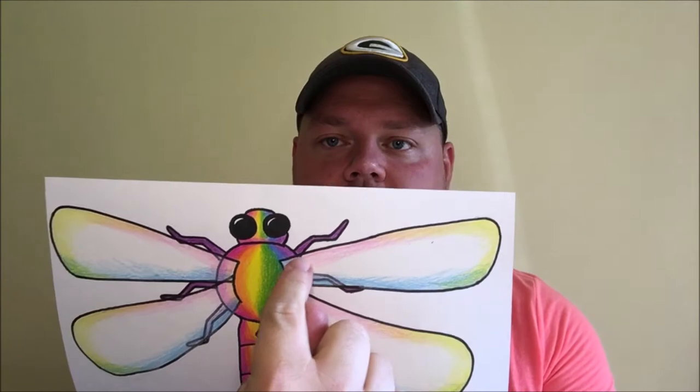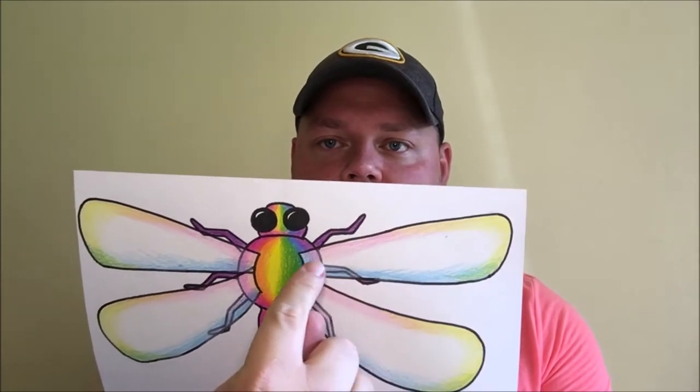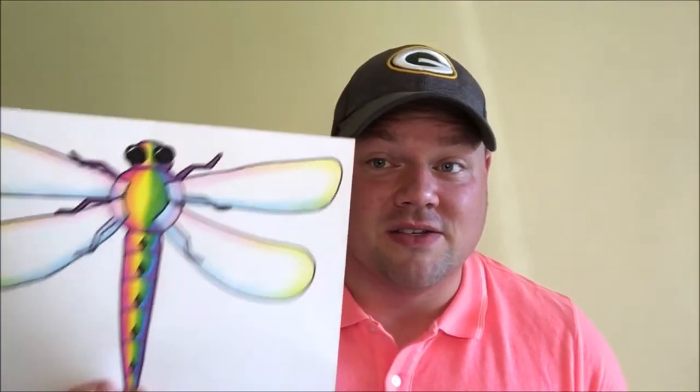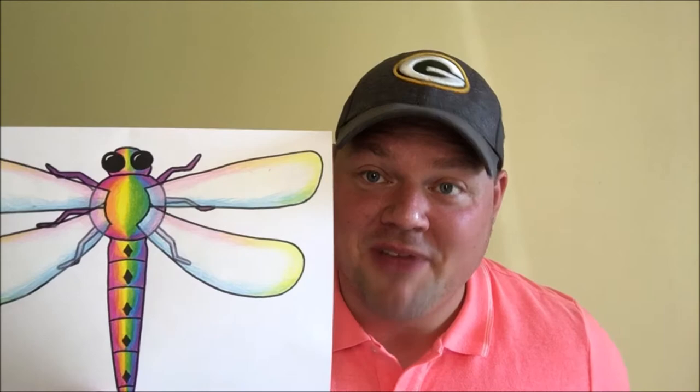I'm even going to show you how to create this cool kind of iridescent look on the wings. Here's what you're going to need today. You're going to need a piece of paper, a pencil, eraser, a permanent marker, and something to color with. I used colored pencils. Go ahead, grab what you need, and let's get started.